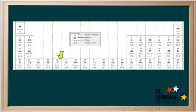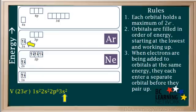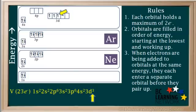Now we'll do the configuration for element number 23, vanadium, V, with 23 electrons. It's 1s2, 2s2, 2p6, 3s2, 3p6, and 4s2. This accounts for 20 electrons, so we still have three more to add. You can see these three go into the first three empty 3d orbitals, occupying one at a time. So the configuration ends in 3d3.